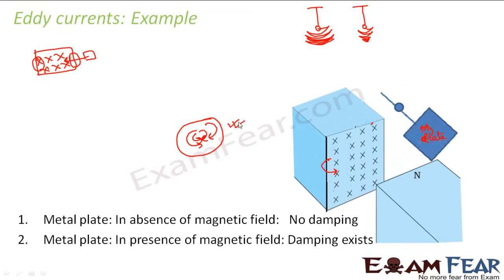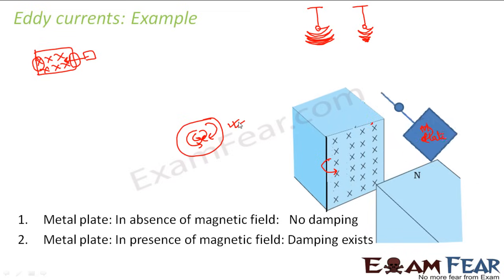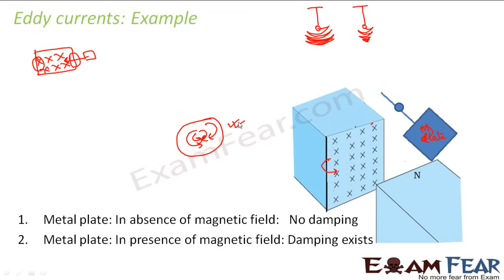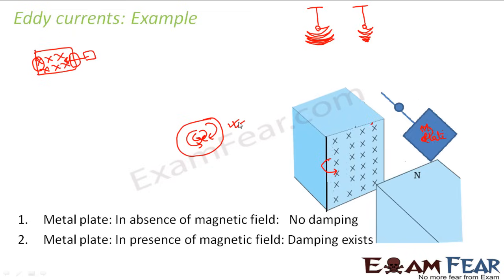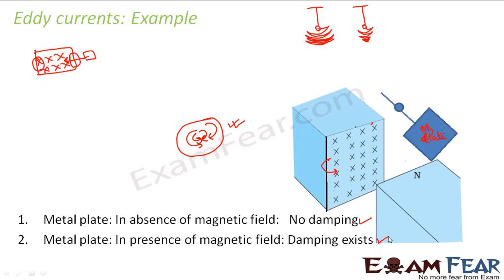Because of the eddy currents, the motion is being damped — the induced currents oppose the plate's movement toward and away from the mean position. So in the absence of a magnetic field there is no damping, but in the presence of a magnetic field, damping exists and eddy currents play an important role. This is known as electromagnetic damping.